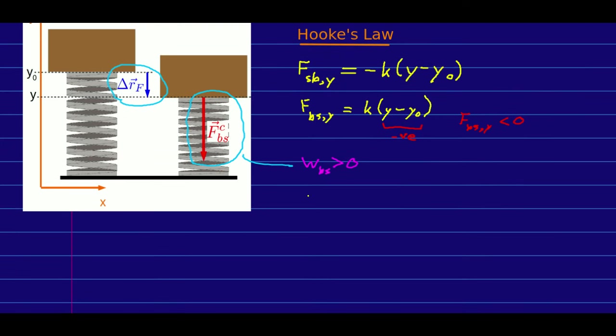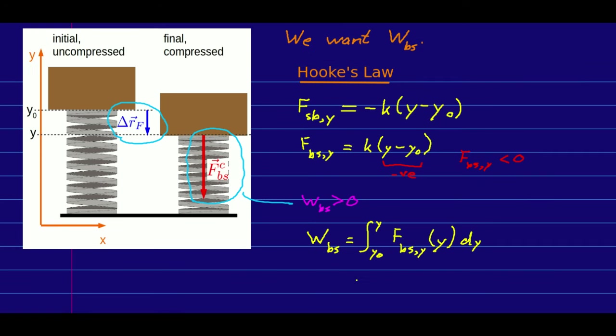What we now can do is use our definition that our work that the brick does on the spring is going to be the integral from y zero to y of the force that the brick exerts on the spring as a function of y dy. So continuing to write out this integral and using our expression for the force, this is the integral of k times y minus y zero with respect to y.